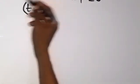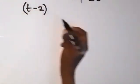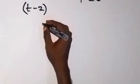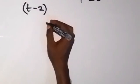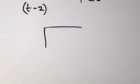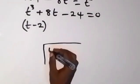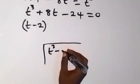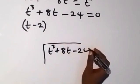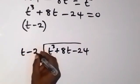Since t minus 2 is a factor, if we divide the polynomial by t minus 2 we will get the remaining factor. So let's divide t raised to power 3 minus 8t minus 24 by t minus 2.